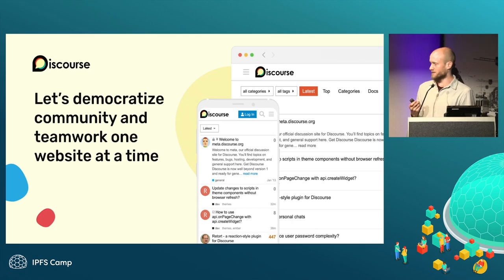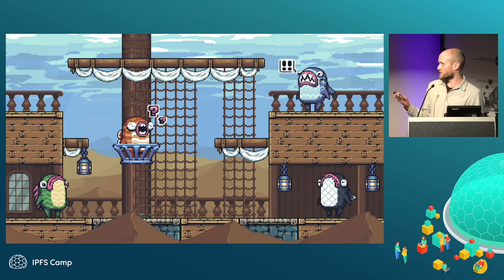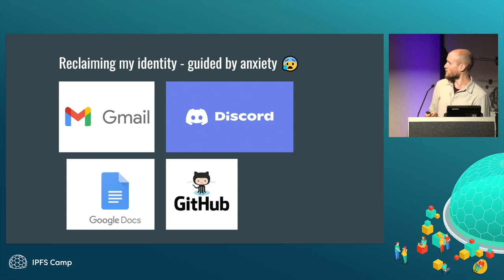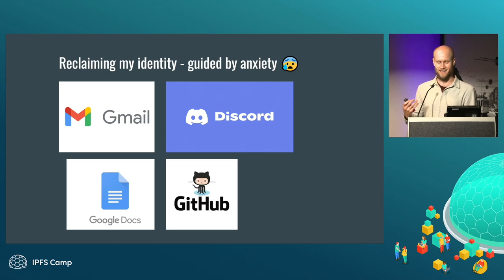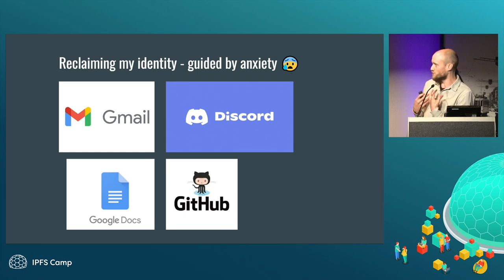A lot of my background is in community work. I used to work for a company called Discourse, an open source forum — I was eventually VP of community there. A few years ago I started my journey as an indie game developer, which is something I've been doing really all my life, but now as a full-time gig, while at the same time building the tools I needed to be properly independent. My whole mission is really to reclaim my identity, and this is guided by anxiety, because my identity — like 90% of me — lives on four platforms, and it just stresses me out. I don't like the fact that if any one of those chunks went away, a huge part of who I am and my work out in the world would just be wiped out.